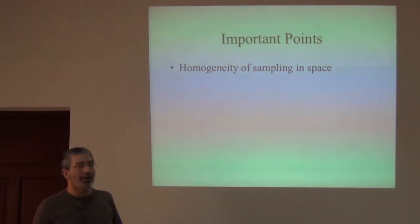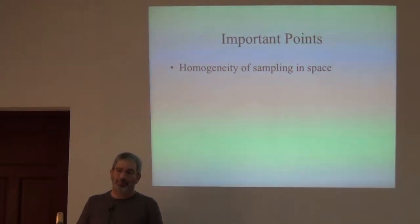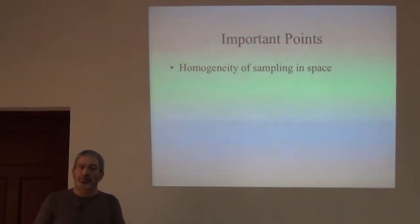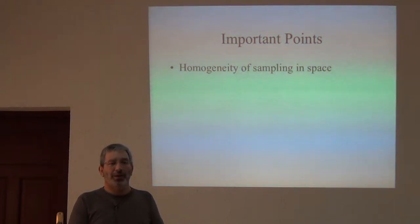So the first one is homogeneity of sampling in space. And right away, you know that we're not going to be sampling homogeneously across Korup National Park. The person who invented that had never walked through a tropical forest landscape. It's not easy. But we need to bear in mind these things. So what we shouldn't be doing is concentrating our efforts overmuch in one particular area. And I'm going to show you reasons why that assumption is important later on.